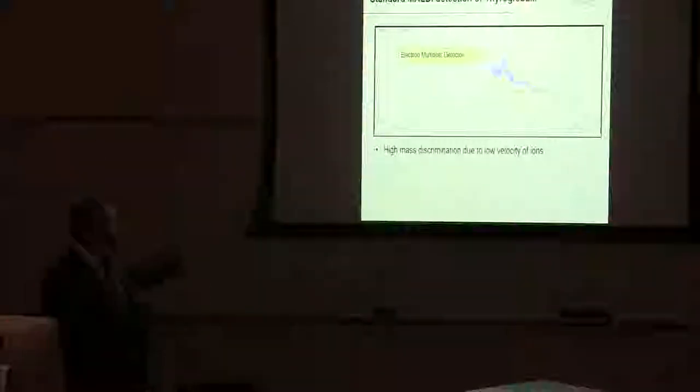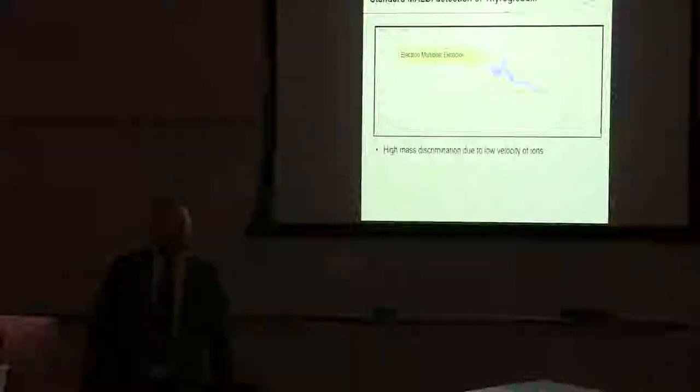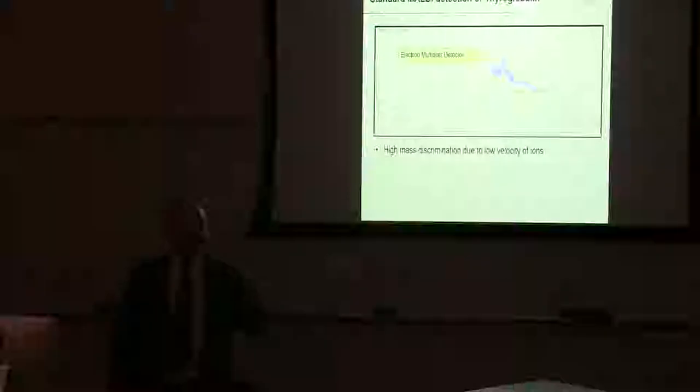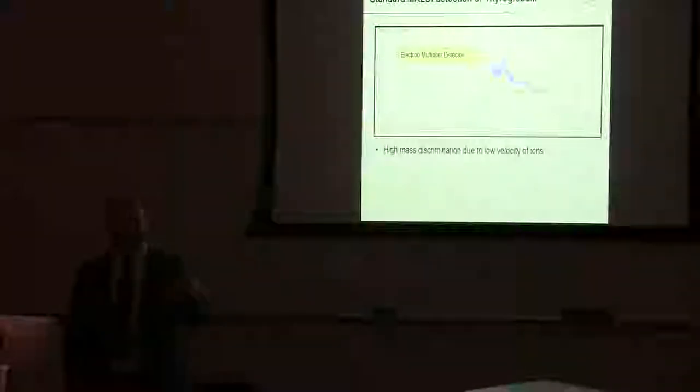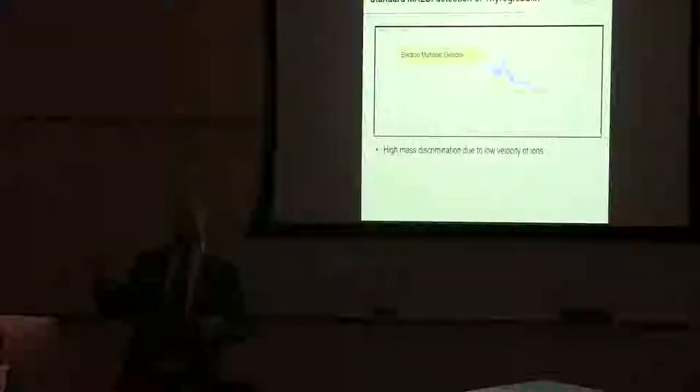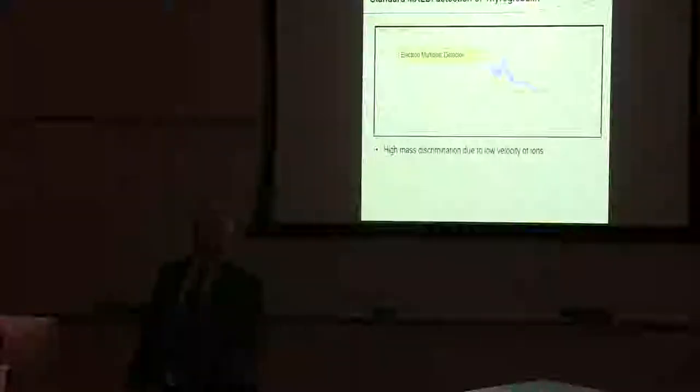So, this is an example of looking at high mass discrimination due to the low velocity of ions. So, when you're looking at high molecular weight species, as they're traveling down the flight path, the velocity, the impact on the detector is not so good. And as a result, you get very low sensitivity as you increase in molecular weight. So, that's going to affect the amount of sample that you need, and also the mass range that you can use to look at your sample. So, this is just using a simple electron multiplier detector.